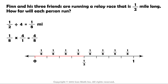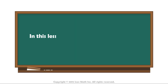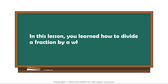Since four and eight have four as a common factor, we divide both the numerator and denominator by four. The fraction simplifies to one-half. So our answer is correct. In this lesson, you learned how to divide a fraction by a whole number using the number line.